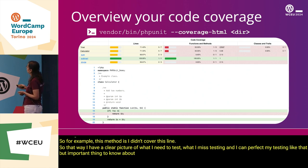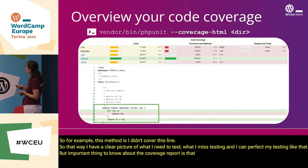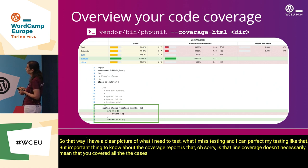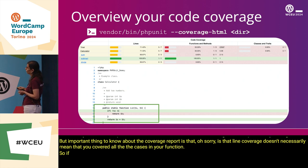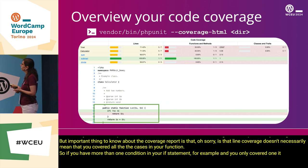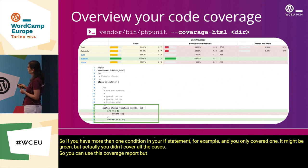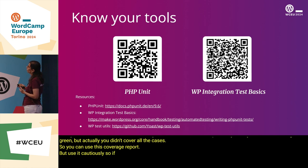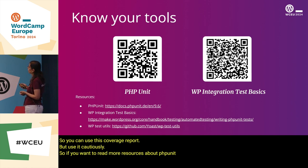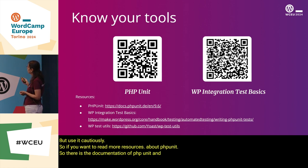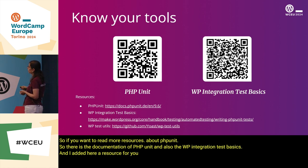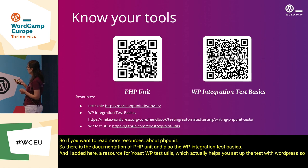An important thing to know about coverage reports: line coverage doesn't necessarily mean you covered all the cases in your function. If you have more than one condition in an if statement and only covered one, it might show as green but you didn't cover all cases. Use the coverage report, but use it cautiously. For more resources, there's the PHPUnit documentation, the WP integration test basics, and Yoast WP Test Utils, which helps you set up tests with WordPress.